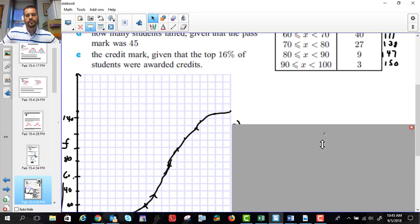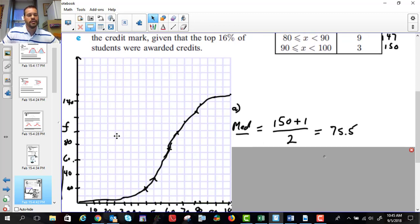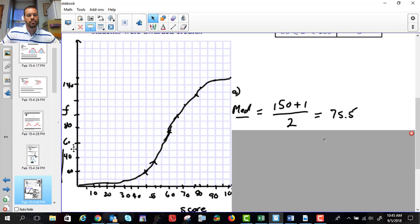So 150, we're going to take 150, add one, and divide by two. So we need the 75.5 mark. So we're going to go to 75.5, and that's about here. We're going to go over, and we're going to go down, and it looks like the answer is about 60.